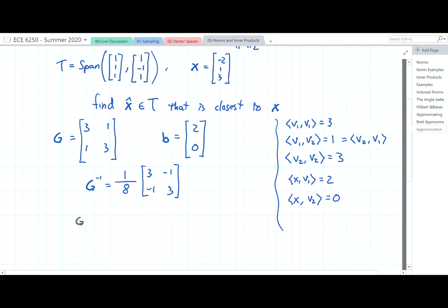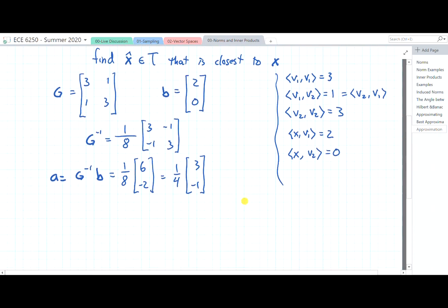And so a is equal to G⁻¹ times b, which is equal to 1/8 times [[3,-1],[-1,3]] times [[2],[0]]. And 3 times 2 is 6, and -1 times 2 is -2. Or 1/4 times [[3],[-1]].